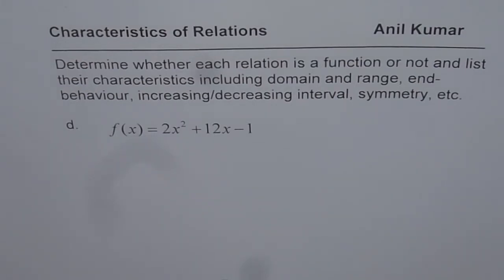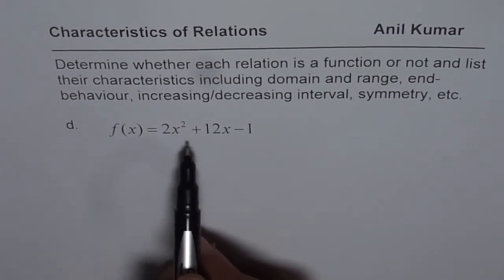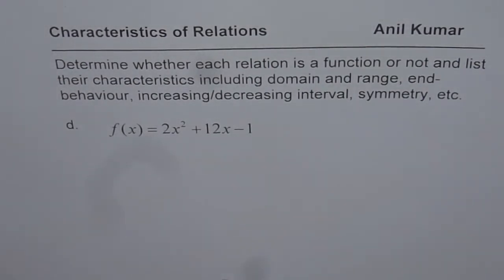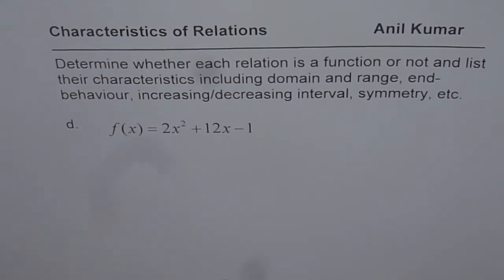Determine whether each relation is a function or not and list their characteristics including domain, range, and behavior, increasing-decreasing interval, symmetry, etc. Part D, the function is 2x² + 12x - 1. As you can see, it is a quadratic function represented by a parabola on the graph.